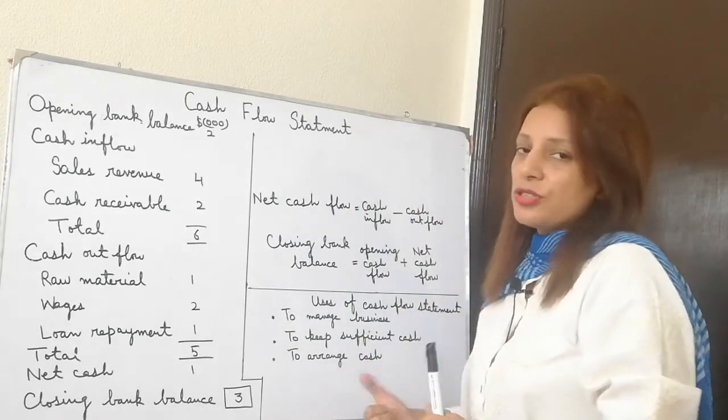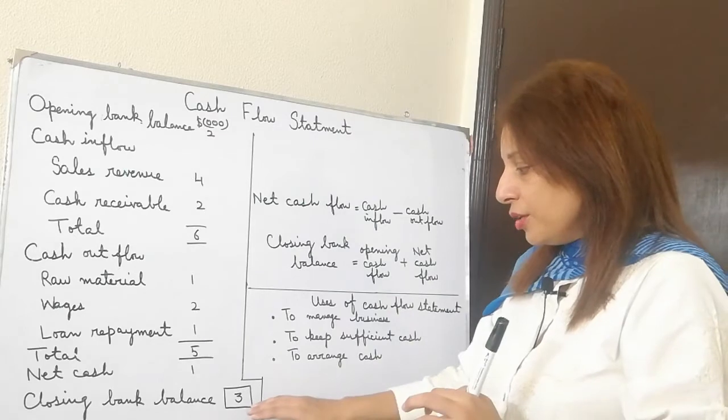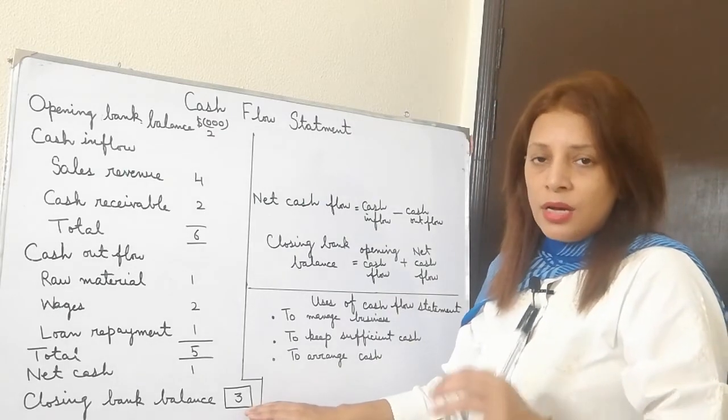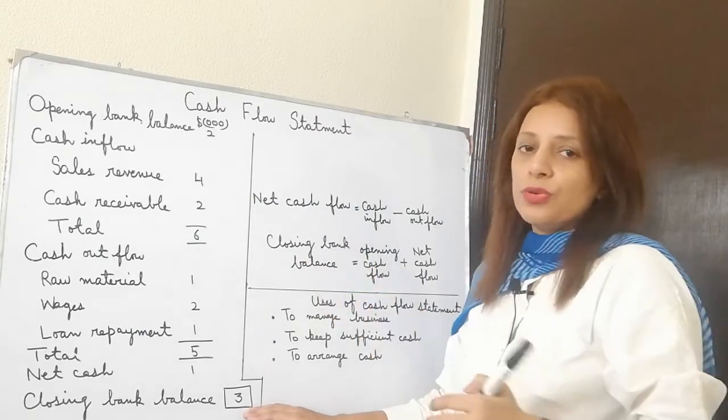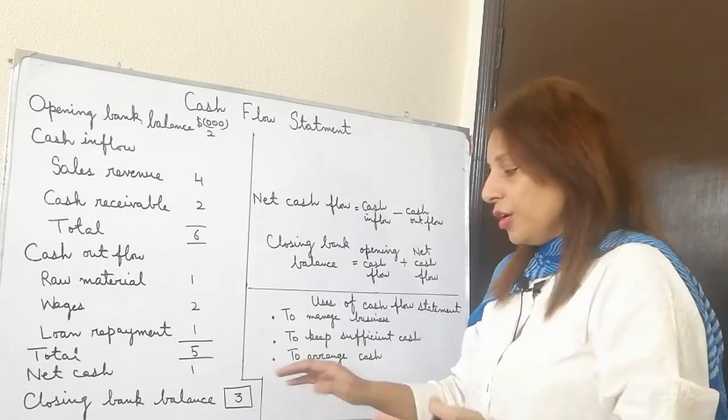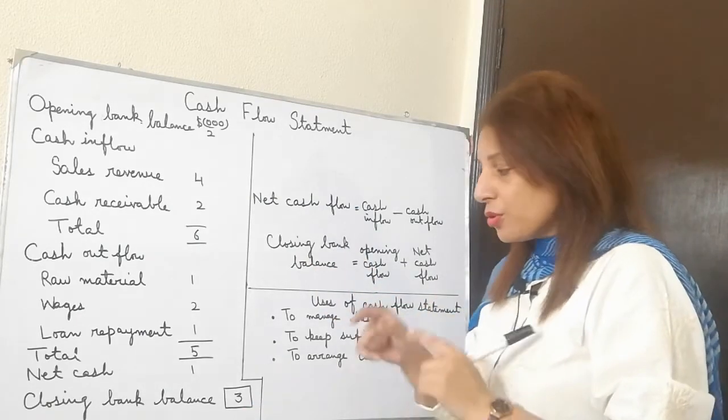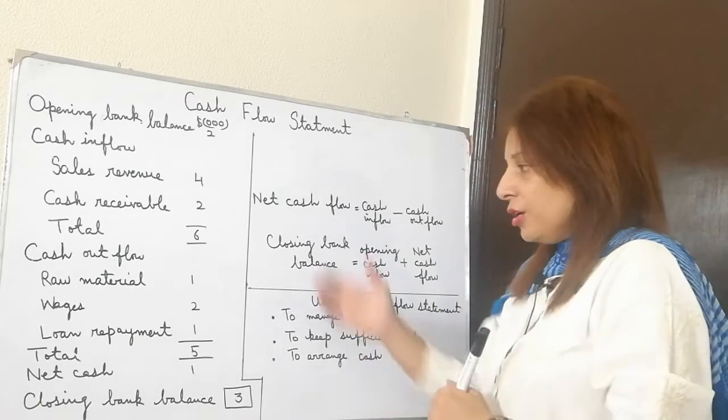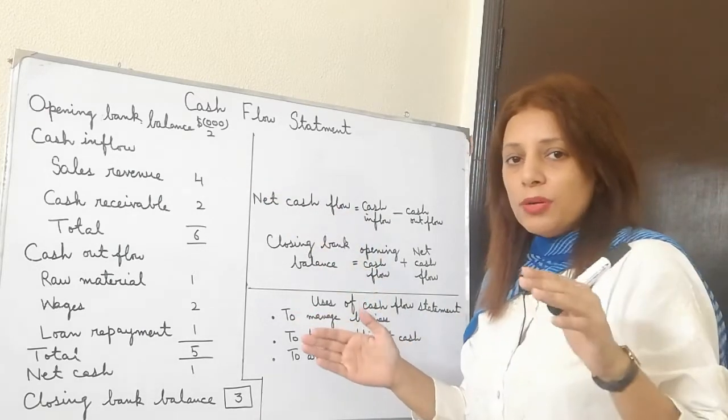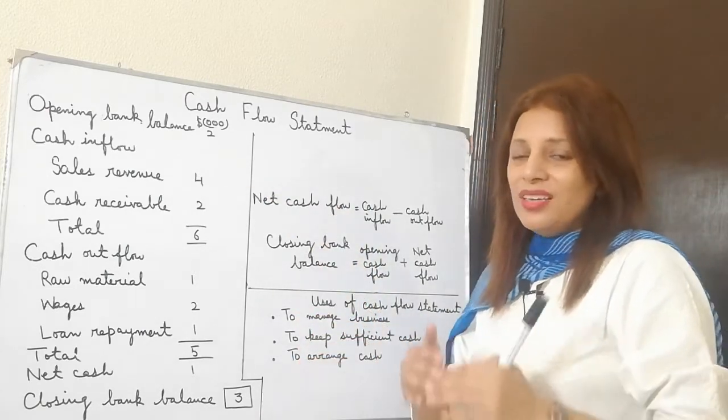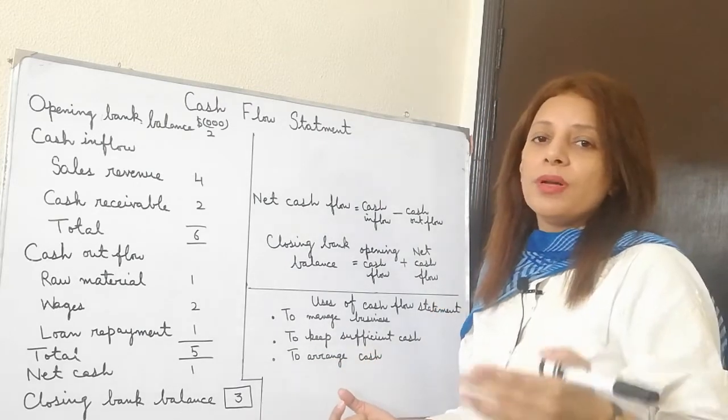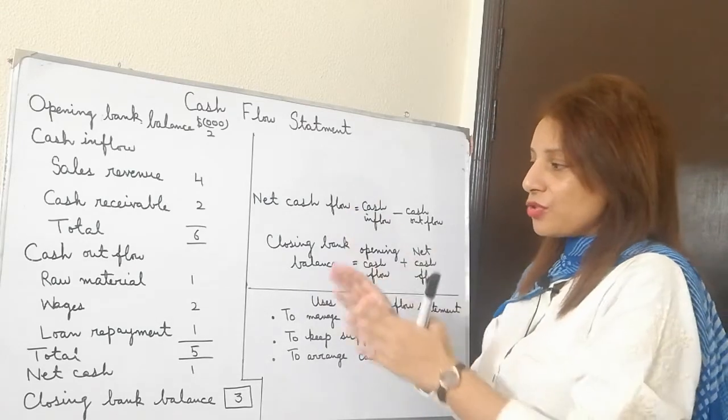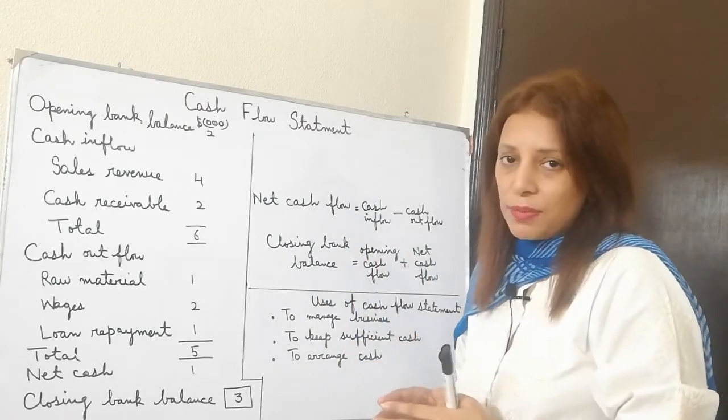I'll keep my money aside for that purpose. Lastly, to arrange cash. For instance, you have negative bank balance and you have to pay some expenses. Your supplier is not going to give you more raw material if you are not paying for the previous one. So you definitely need money for that. You have to show the statement to your bank manager so that he can make it possible for you to have overdraft before you need this.